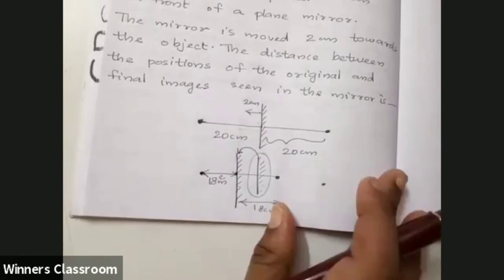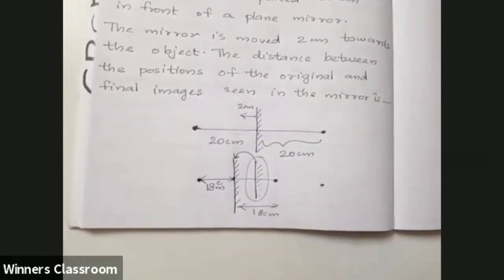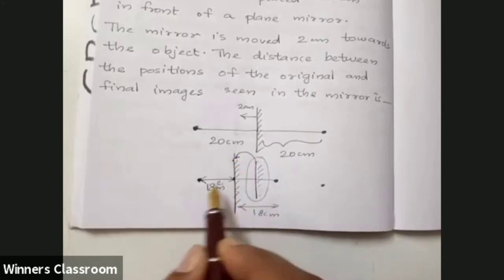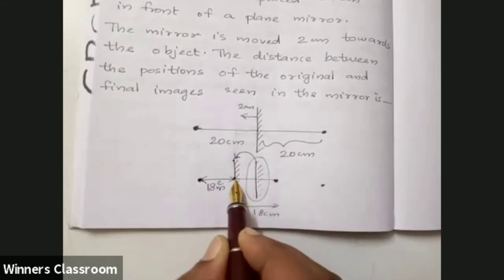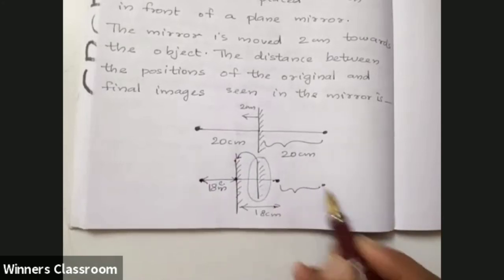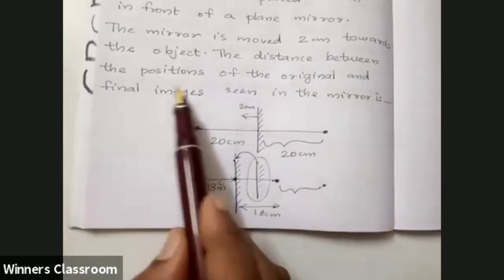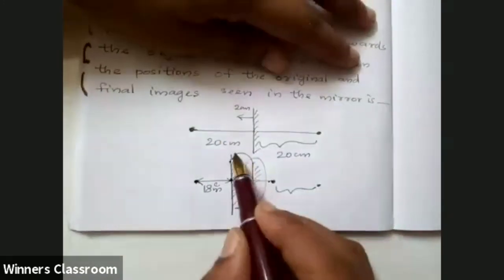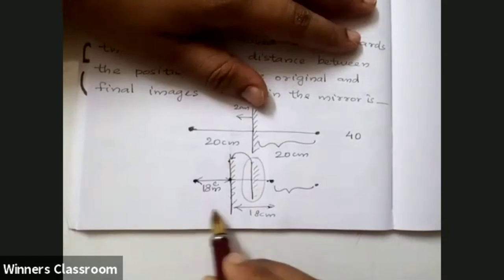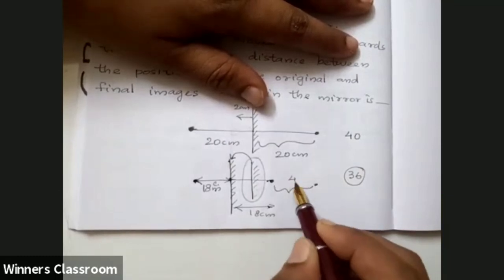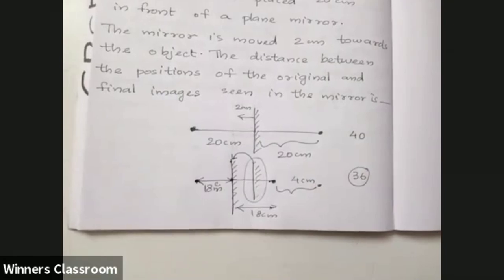It's the same distance between the mirror and the image. The image will also be 18cm. The distance between the positions of the original and final images — the distance between the mirror is 40cm, so it looks like it's 21cm.